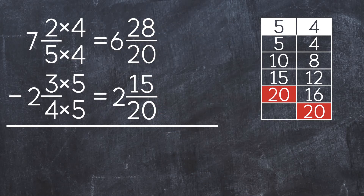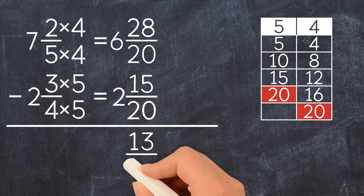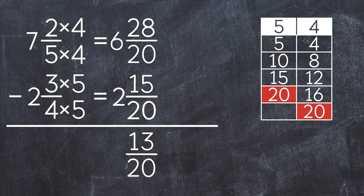Now we add the whole number and the two fractions to get 6 and 28 twentieths. This is a mixed number with a fraction greater than 1, so now we can subtract. First, we subtract the fractions: 28 twentieths minus 15 twentieths gives us 13 twentieths. Next, we subtract the whole numbers: 6 minus 2 equals 4. So the final answer is 4 and 13 twentieths.